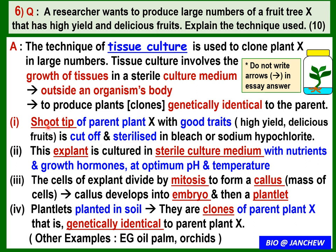The model answer notes include: shoot tip of parent plant X with good traits is cut off and sterilized in bleach or sodium hypochlorite. The explant is cultured in a sterile culture medium with nutrients, growth hormones, and optimum pH and temperature. Cells of the explant divide by mitosis to form a callus, which develops into an embryo and then a plantlet. The plantlets are planted in soil and are clones of parent X, genetically identical to it.